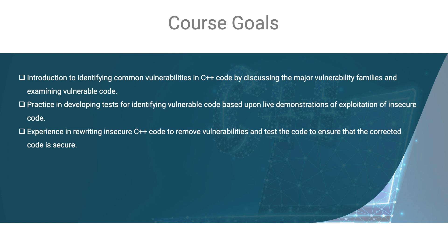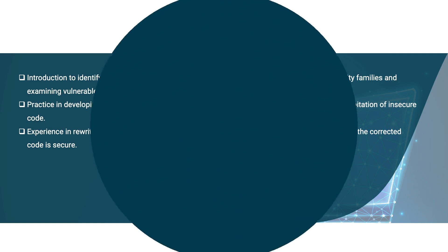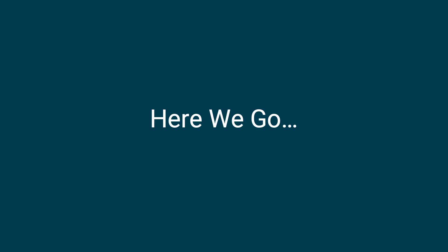Finally, we're going to talk about fixing the problem in our code. We'll gain experience rewriting insecure C++ code to remove vulnerabilities, and then use those same tests to make sure the corrected code is actually secure. It's entirely possible to create a patch, rewrite code, and find that the patch doesn't solve the problem — so it's important to test again after rewriting to make sure the vulnerability actually stays fixed. And so this covers our goals for this class.